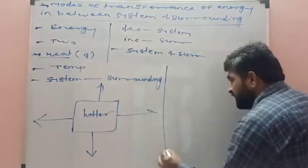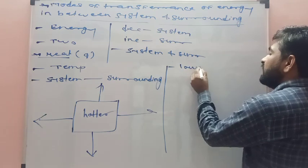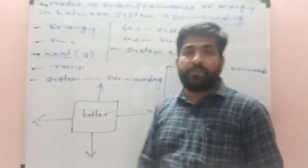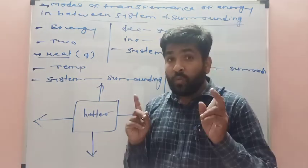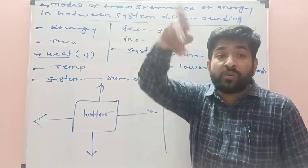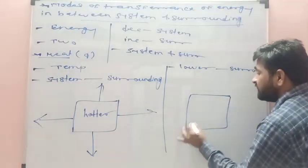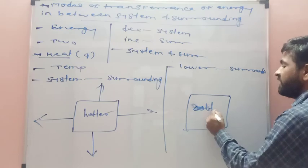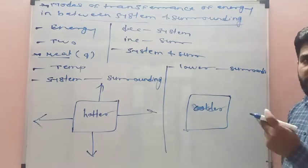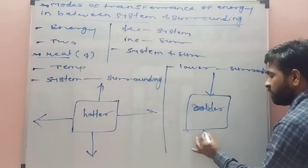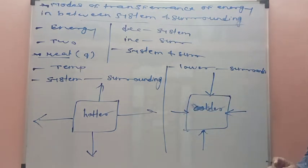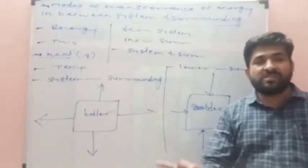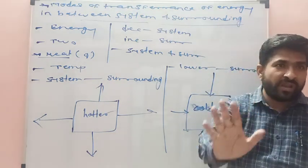Now, if the system is at a lower temperature than the surrounding — that is, the temperature of the system is less compared to the surrounding — then the system is cooler than the surrounding. Therefore, the heat is transferred from the surrounding to the system, because the temperature of the system is lower than the surrounding.